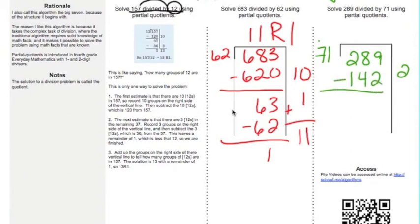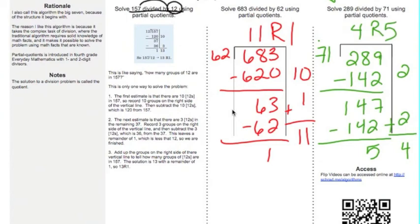I can do that one. 9 minus 2 is 7. 8 minus 4 is 4. And 147. Oh, I can do 142 again, if I take two more sets out. So, I get 7, 6, 5. I have 5 left. 71 doesn't go into 5. I found my answer. It's 4, with a remainder of 5. But, there are lots of different ways to come up with this answer.